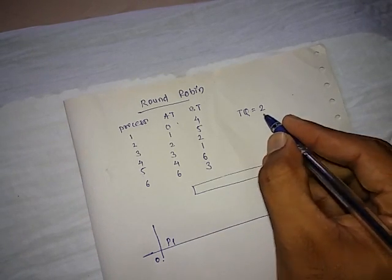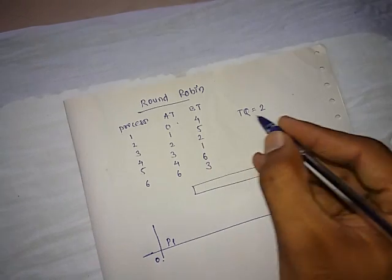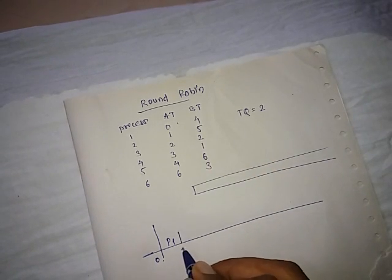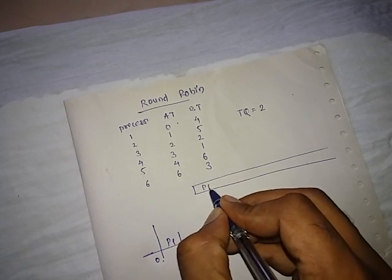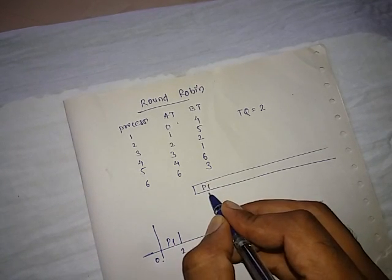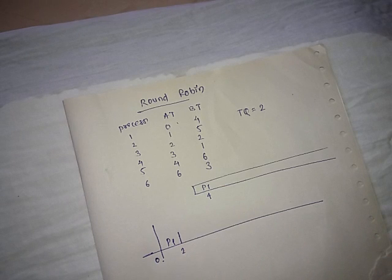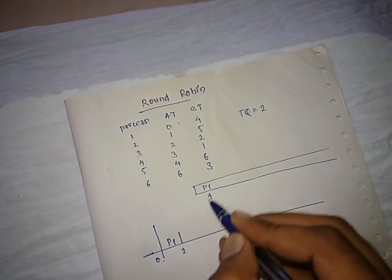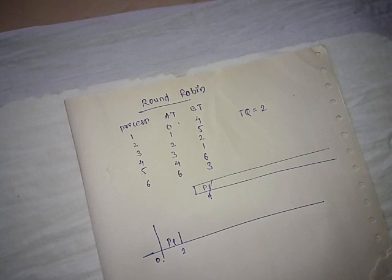The time quantum is 2 and P1 requires 4, so we are going to schedule P1 up to 2. For the time interval of 0, we have P1 process for 4. From this 4, we have scheduled 2 here. Until the completion of 0 to 2, we might have some other processes in the system.